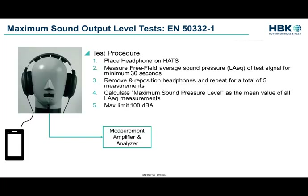Once we have set up our audio player with the prescribed configuration and test file, it's a relatively simple test. Fit the headphone on the head and torso simulator. Measure the average free field A-weighted sound pressure level, or LA EQ, for at least 30 seconds. Remove and reposition the headphone and repeat for a total of 5 measurements. The arithmetic average of the left and right channels for all measurements is the resulting maximum sound pressure level of the system and should not exceed 100 dBA.